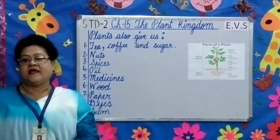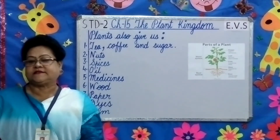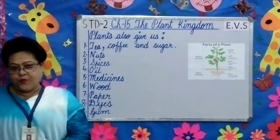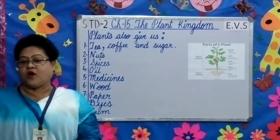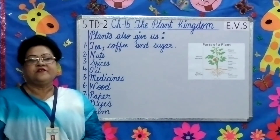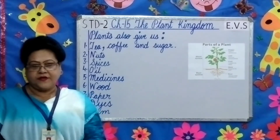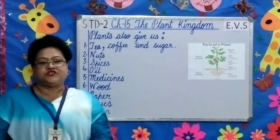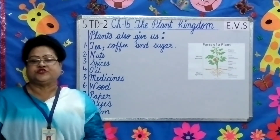Oil is also applied on skin and hair. Plants like neem, tulsi, and eucalyptus give us medicines. Wood from trees like teak and shisham is used to make furniture, and wood is also used as fuel. We get paper from the bamboo tree. Plants like henna and indigo give us dye. We get gum from the juice of the acacia tree. Dry leaves are used to make compost.